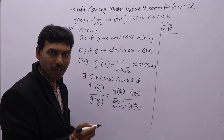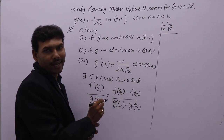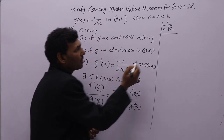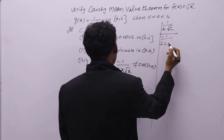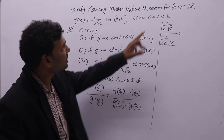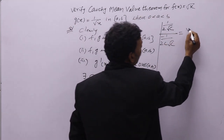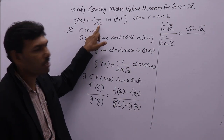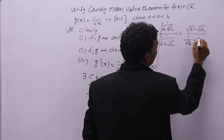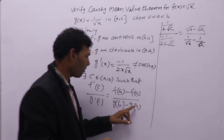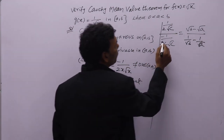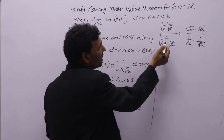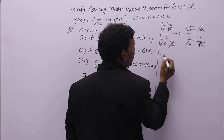f dash of c: differentiation of root x is 1 by 2 root x, so f dash of c is 1 by 2 root c. g dash of c: differentiation of 1 by root c is minus 1 by 2c root c. On the right side: f(b) minus f(a) equals root b minus root a, and g(b) minus g(a) equals 1 by root b minus 1 by root a. The 2 and root c cancel, and the denominator c comes to the numerator.